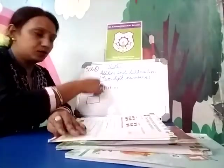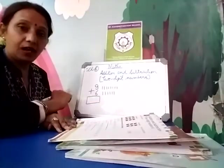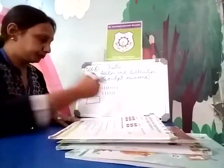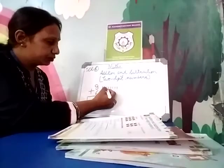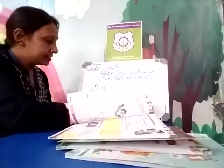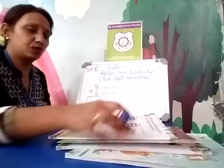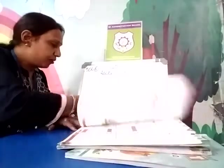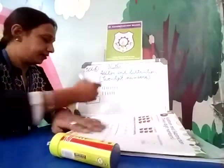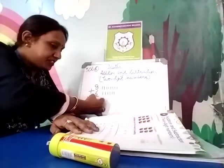Next draw 6 lines. Now count all the lines together: 1, 2, 3, 4, 5, 6, 7, 8, 9, 10, 11, 12, 13, 14, 15. All together there are 15. So what we will write there? 1, 5 — that is 15.